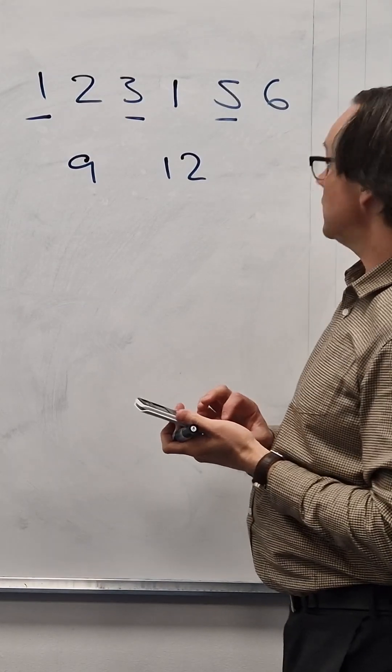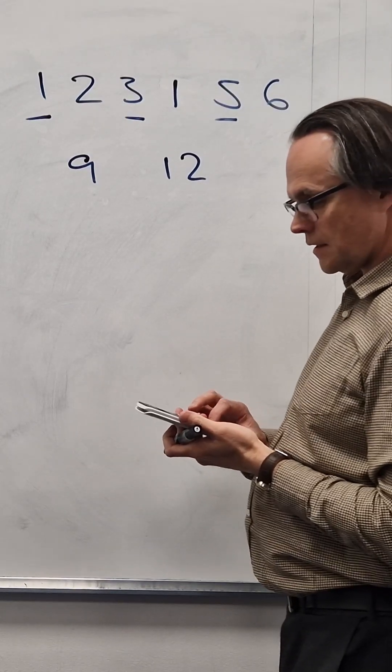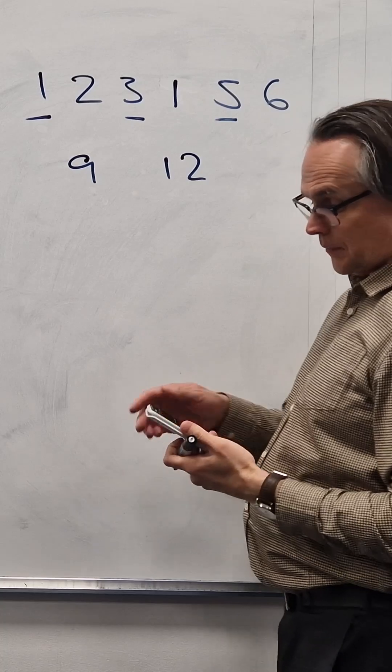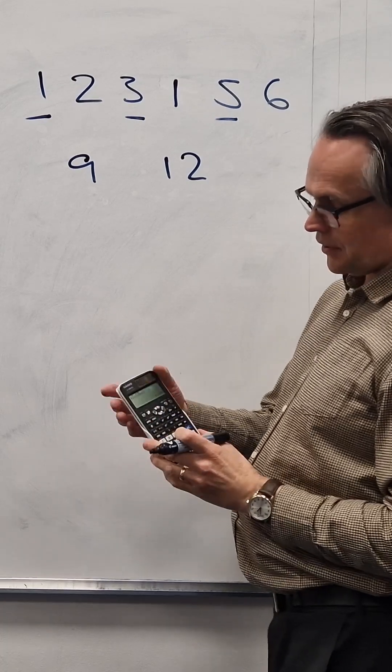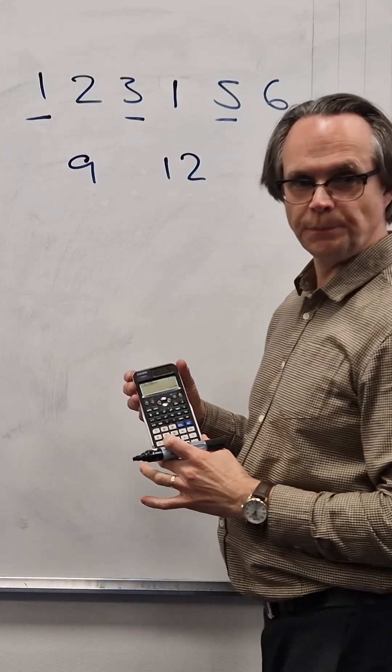One, two, three, one, five, six — divided by 11 — is 11,196 times 11.